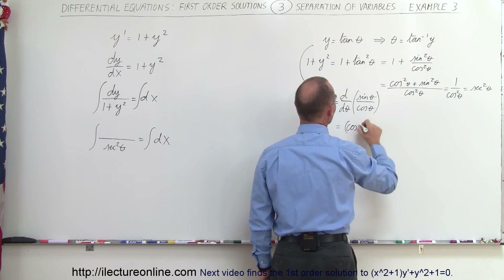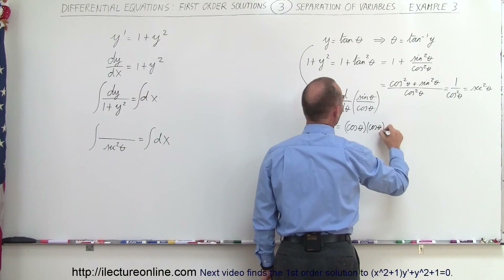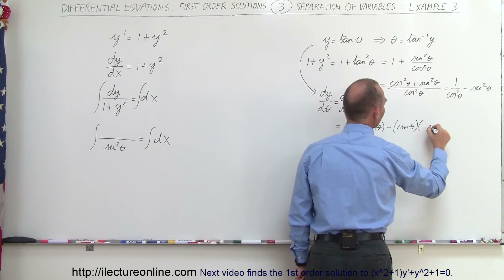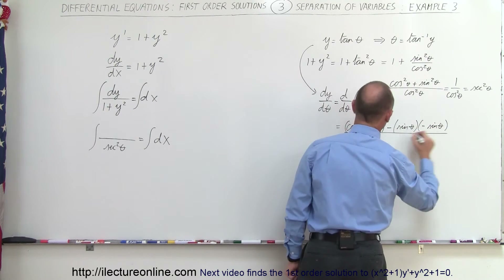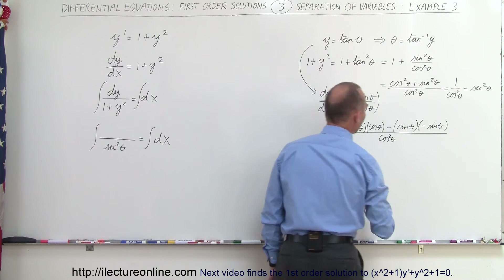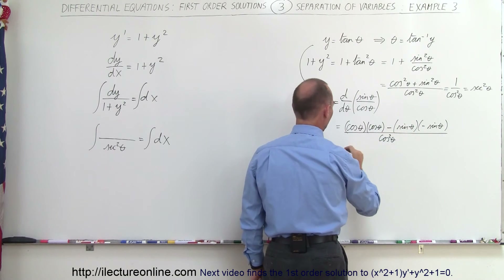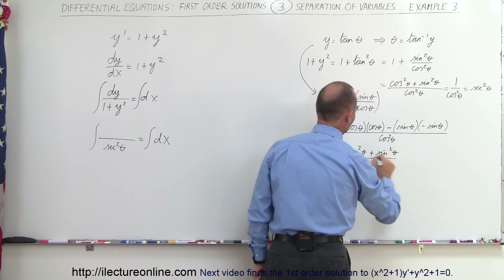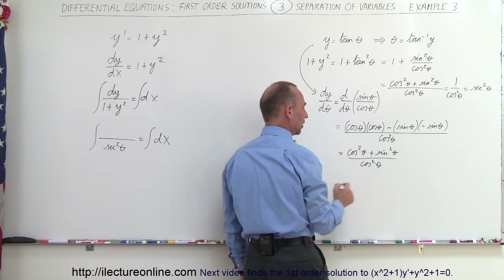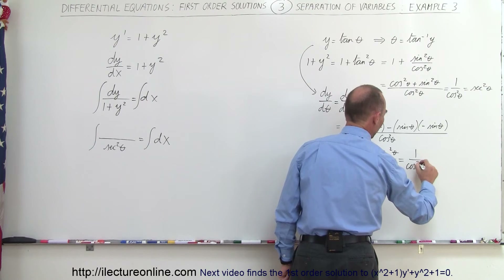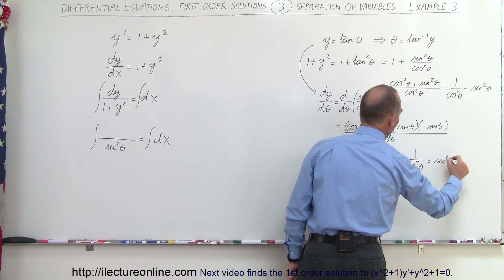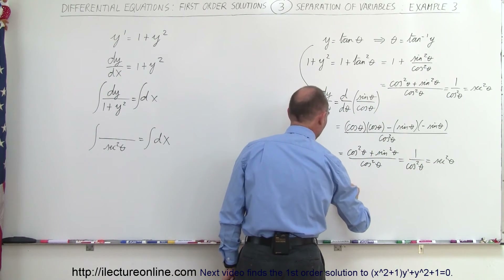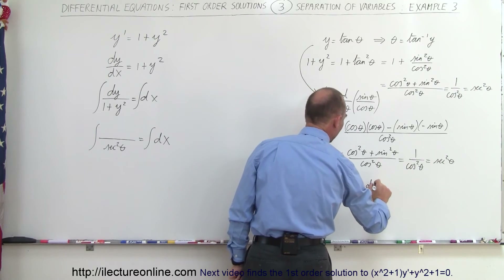Applying the quotient rule: the denominator cosine of theta times the derivative of the numerator, cosine of theta, minus the numerator sine of theta times the derivative of the denominator, which is negative sine of theta, all divided by cosine squared of theta. The two negatives make a plus, so we get cosine squared plus sine squared of theta over cosine squared of theta. That equals 1 over cosine squared of theta, which is secant squared of theta. So dy/dθ equals secant squared of theta, meaning dy equals secant squared of theta times dθ.